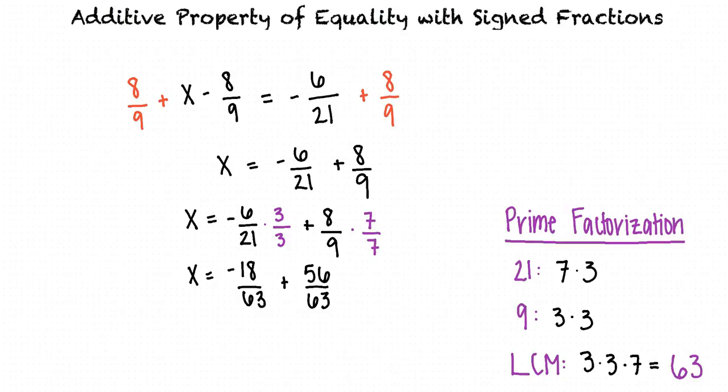We can do this by adding the numerators and keeping the denominators the same. Negative 18 plus 56 equals 38. So our answer is x equals 38 over 63.